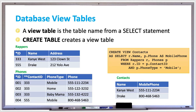Let's say you had a list of contact names and addresses in one table, but all their phone numbers were in a different table. A view table would solve this problem by creating results that combine data from both — so you'll have names, addresses, and phones in one view.